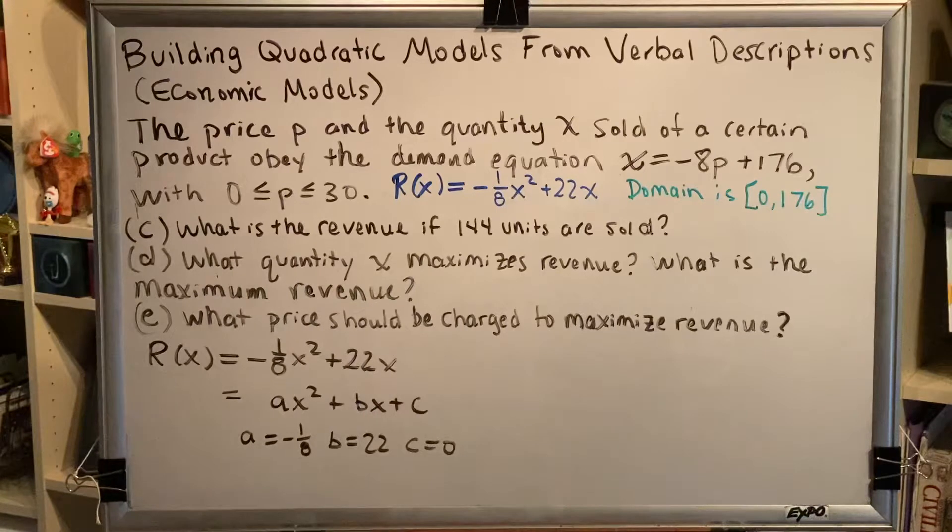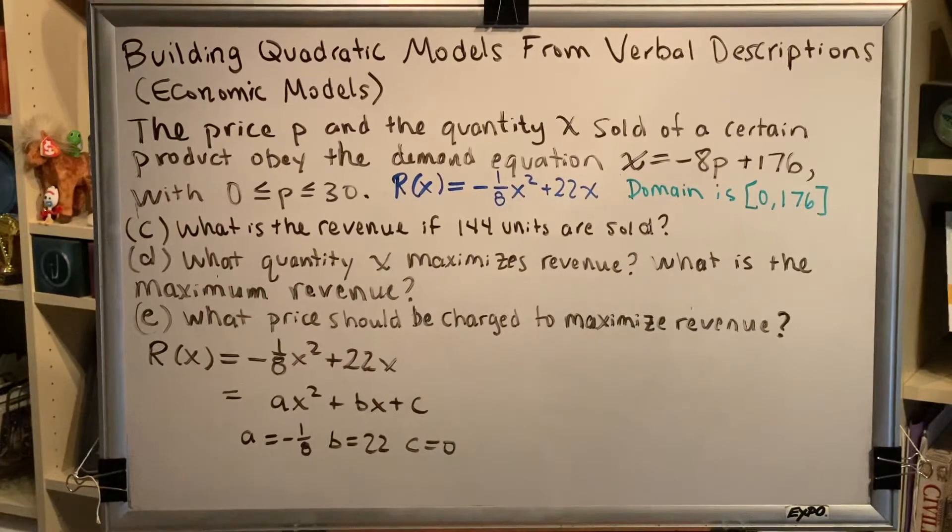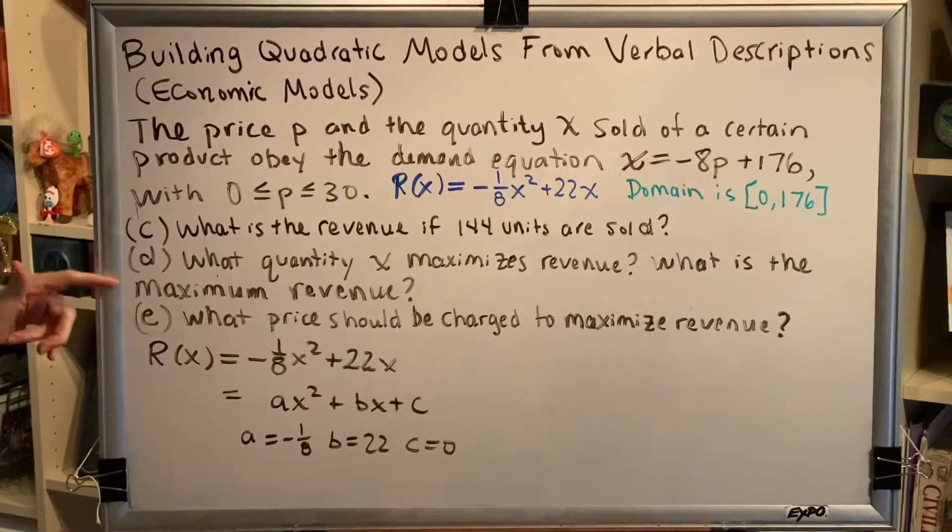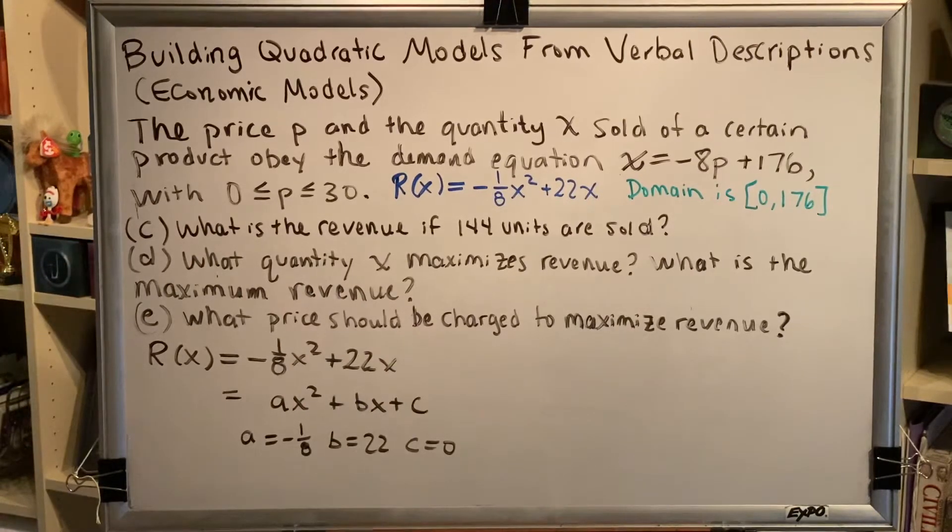B is equal to 22, and C is equal to 0. So, if we can just find the vertex, that will give us everything that we need in order to answer both of these questions. Because one coordinate will give us the X, and the other coordinate will give us the R of X, the revenue, also known as the Y.